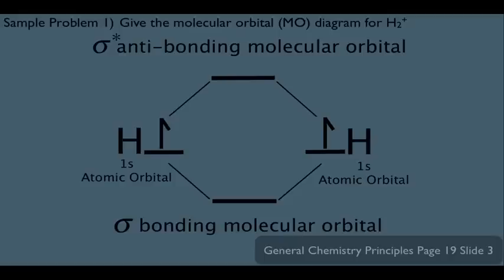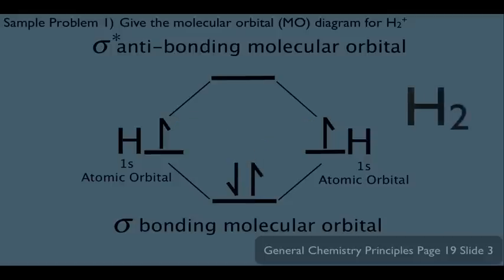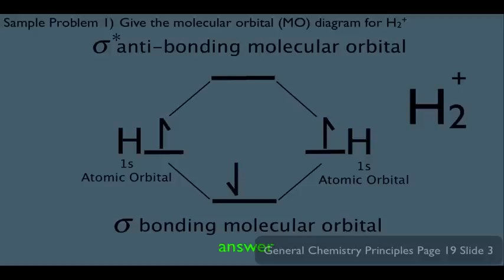For a sample problem: give the molecular orbital diagram for the H2+ molecule. We start with the same arrangement and fill in the central part with the available electrons — that gives us the molecular orbital diagram for the neutral H2 molecule. However, H2+ is missing one electron, so we simply remove one of the electrons from the molecular orbitals. This becomes the molecular orbital diagram for the H2+ molecule.